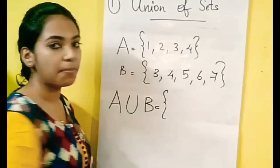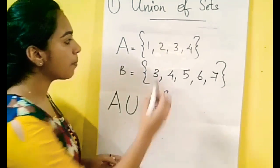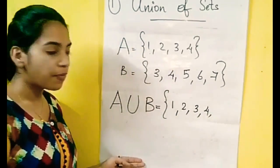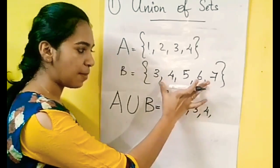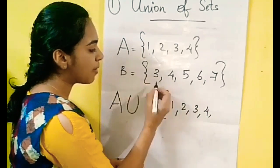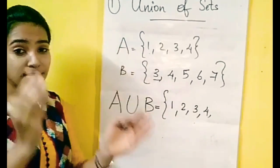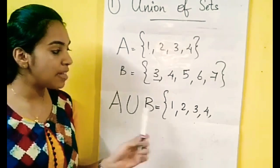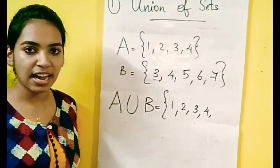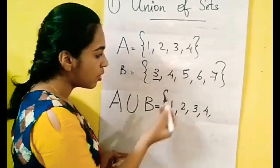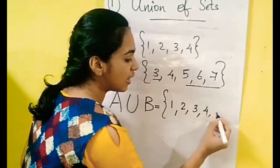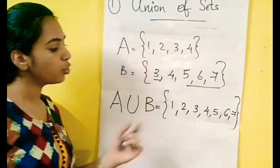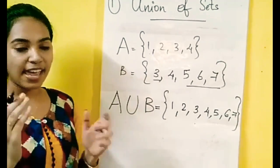If we have a set of two elements, we will combine them. Now, we have elements in the first set: one, two, three, four. If we have a set of two elements, we will combine them — distinct and different elements. So, the A union B is the concept here.